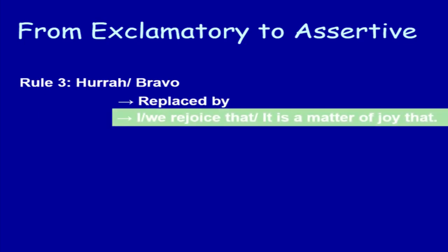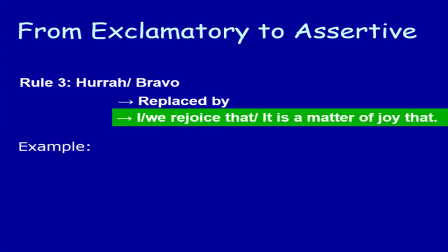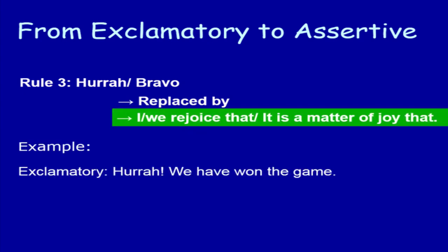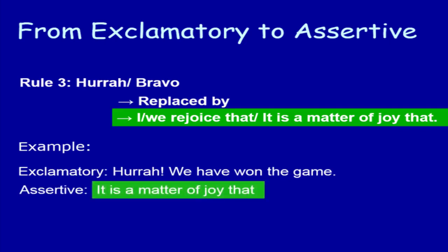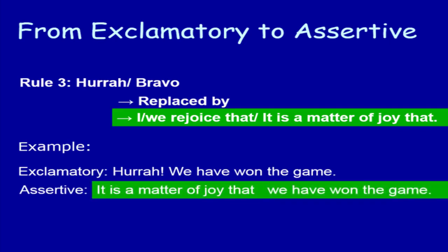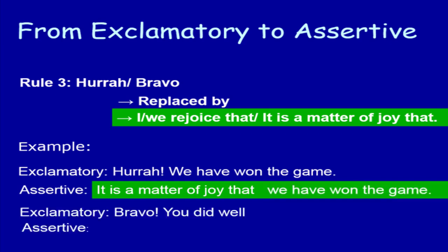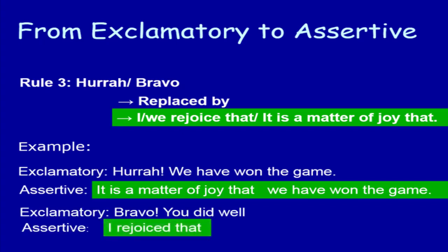Rule number 3. 'Hooray' and 'Bravo' are replaced by 'I/we rejoice that' or 'It is a matter of joy that.' Example: 'Hooray, we have won the game.' In place of 'Hooray,' write 'It is a matter of joy that,' then write the rest of the sentence without any change. Another example: 'Bravo, you did well.' In assertive sentence, write 'I rejoice that' or 'We rejoice that you did well' — write the rest part of the sentence without any change.